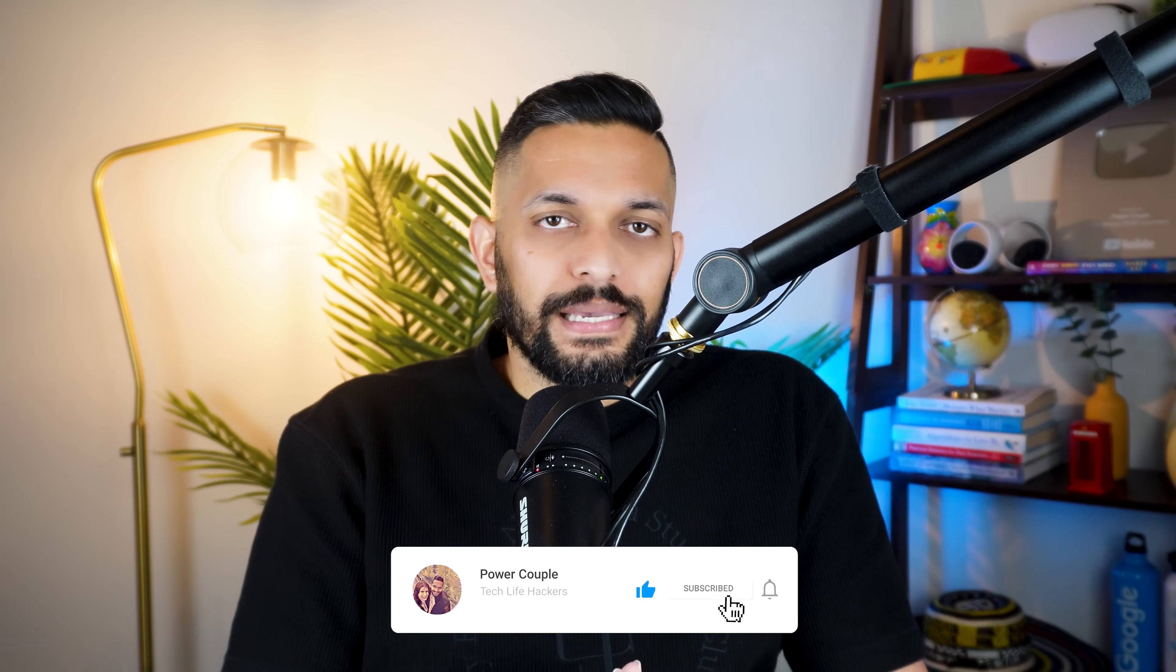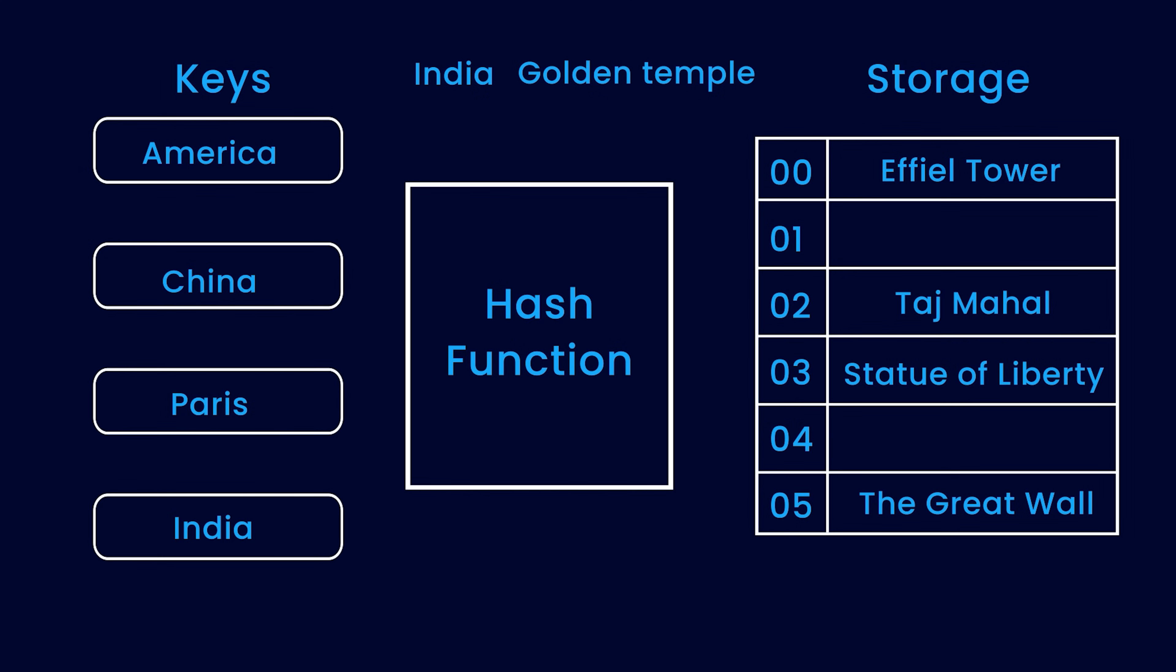For now, you can think of hash function as a black box that takes a key as input and gives out an index as the output. If the array already has a value stored at this index, a list can be used to store multiple values at this index. Enough about the theory.